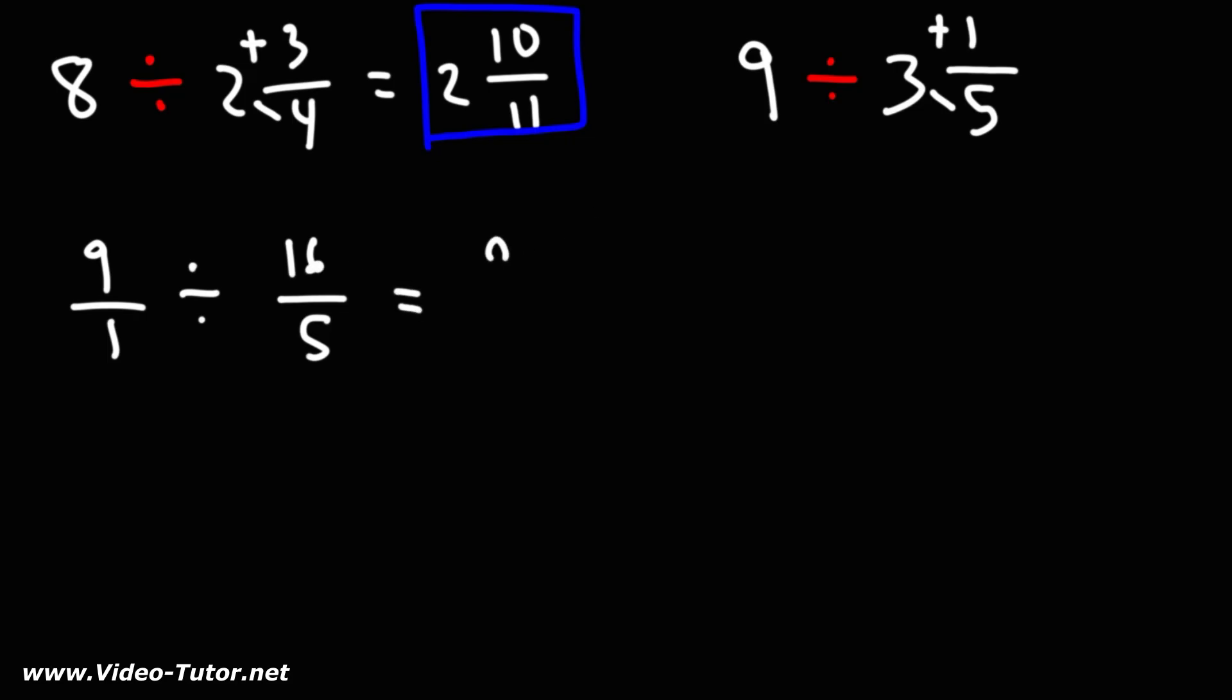Using keep-change-flip, we'll keep the first fraction the same, change division to multiplication, and flip the second fraction. 9, 5, and 16 don't have any common factors, so we multiply across. 9 times 5 is 45, 1 times 16 is 16.